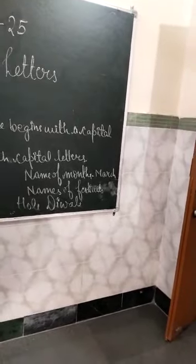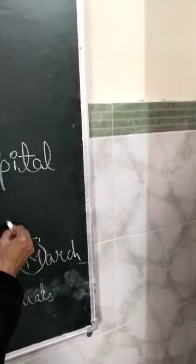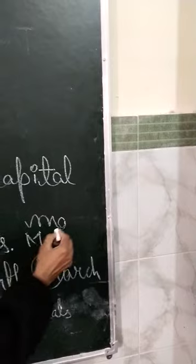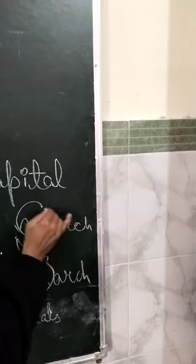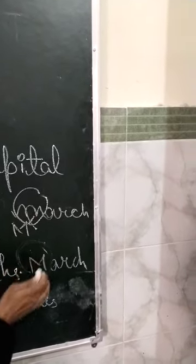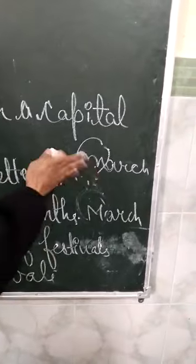Name of months. If you are going to write the name of a month, you should start with a capital letter. You can't write it with a small letter — for example, M-A-R-C-H written in small letters would be incorrect. So always, while you are writing any month's name, you have to write it with a capital letter.